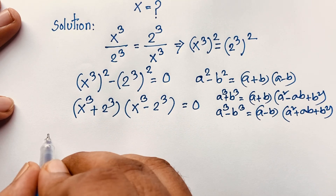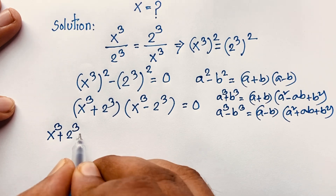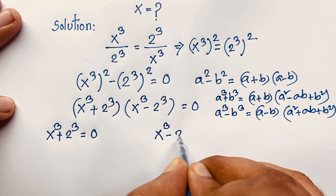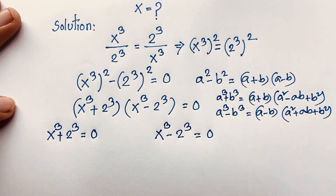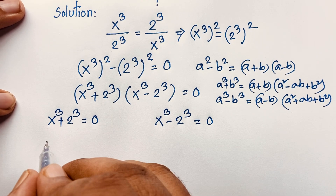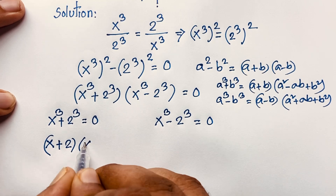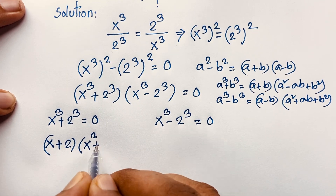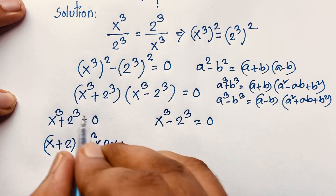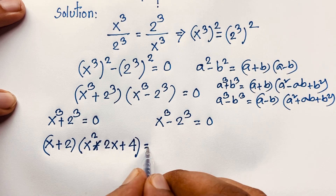So here, x³ + 2³ = 0 gives us, by the sum of cubes formula: (x + 2)(x² − 2x + 2²) = 0, which is (x + 2)(x² − 2x + 4) = 0.